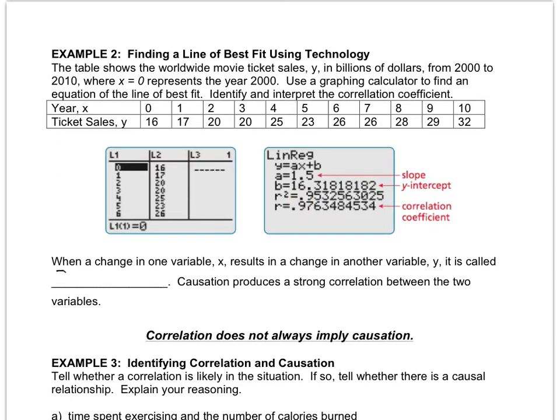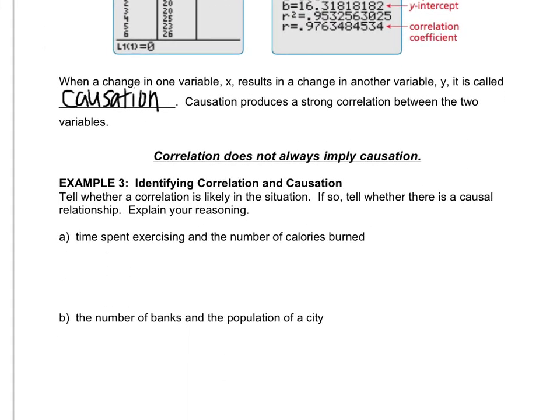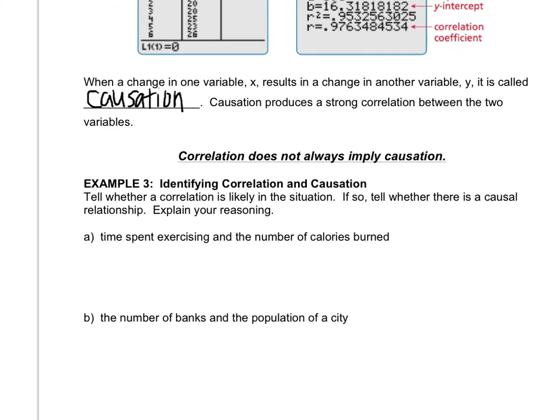There's one more thing I want to talk about, and that's called causation. When a change in one variable results in a change in the other, then it's called a causation. Now, a causation creates a correlation, but just because things are correlated doesn't mean that it's a causation. For example, let's look at example three. Tell whether a correlation is likely. If so, tell whether there is a causal relationship. That's how you read that. It's not sometimes I have kids read it as a casual relationship. It's a causal relationship. And we have to explain.